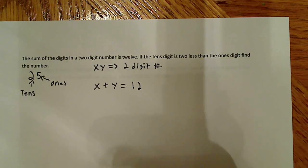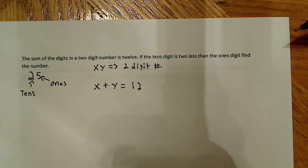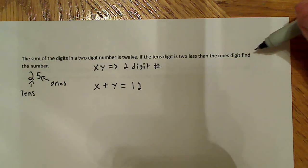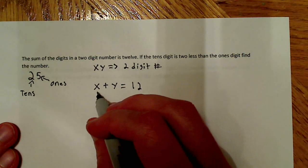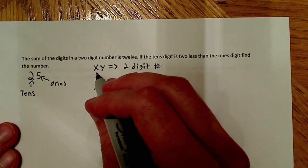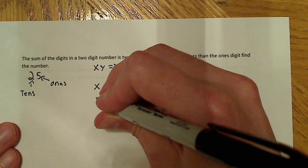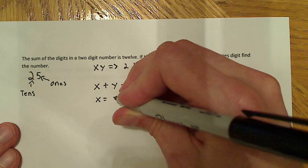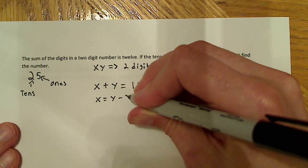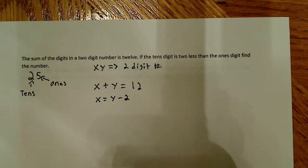And it says the tens digit is two less than the ones digit. So the tens digit is two less than the ones digit. So x is defined as my tens digit, as defined right there. So what I'm going to say is x is equal to y minus 2. So it's equal to y minus 2.